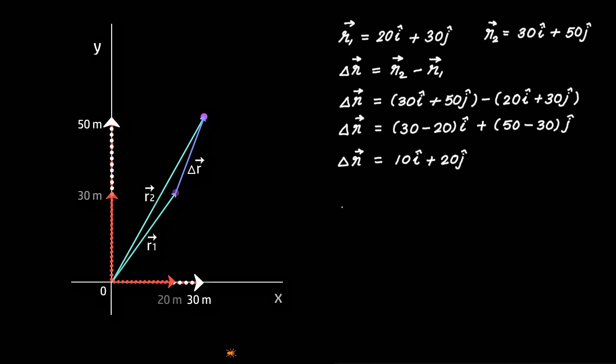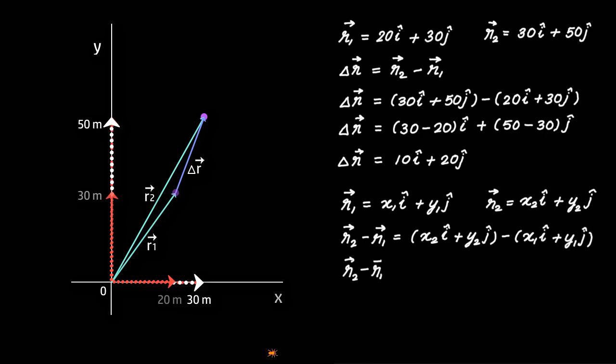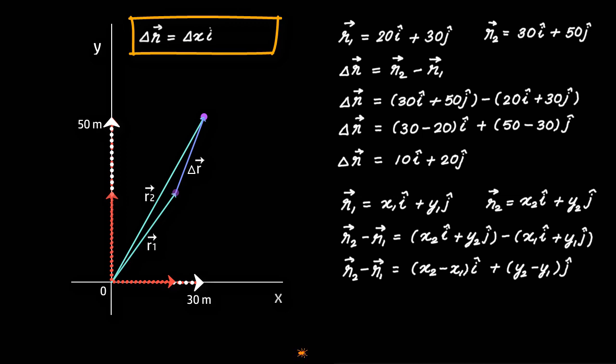In a more general way, if r1 = x1i + y1j and r2 = x2i + y2j, then Δr = r2 - r1, which equals (x2i + y2j) - (x1i + y1j), or r2 - r1 = (x2 - x1)i + (y2 - y1)j, which can also be written as Δr = Δxi + Δyj, where Δx = x2 - x1 and Δy = y2 - y1.